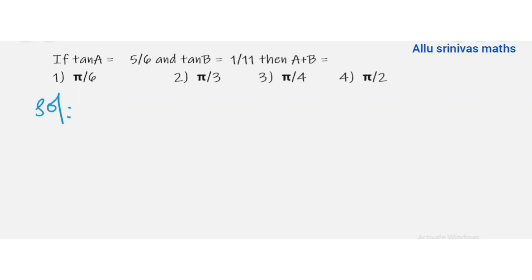Solve the problem: if tan A equal to 5 by 6 and tan B equal to 1 by 11, then A plus B equal to what value? The options are π/6, π/3, π/4, π/8. We have the formula tan(A+B) equal to tan A plus tan B.